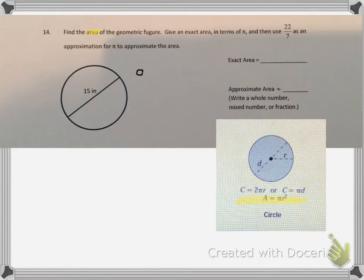In the figure, we are given the diameter, which is 15 inches. So our radius is half of that, or 7.5 inches.